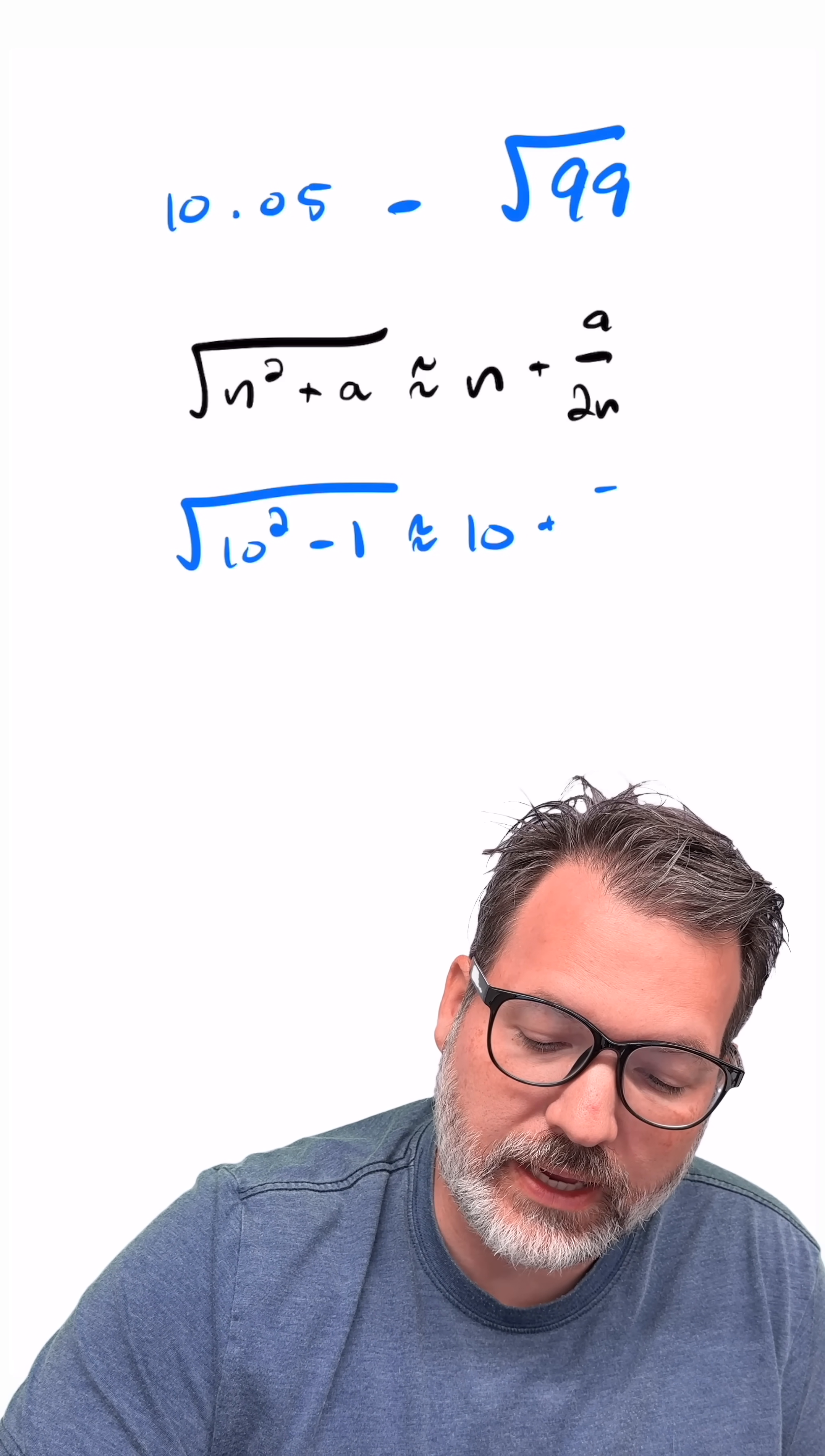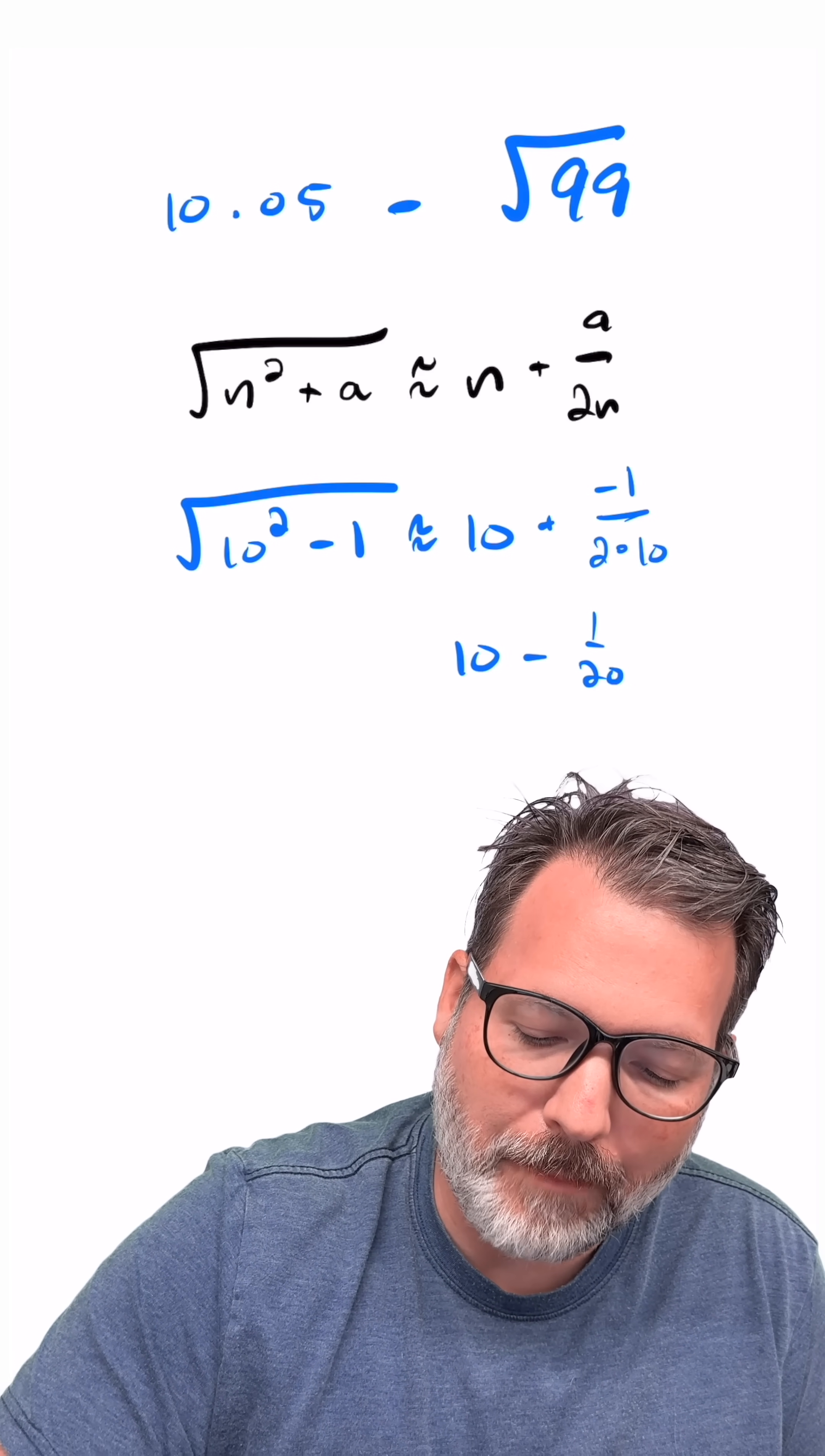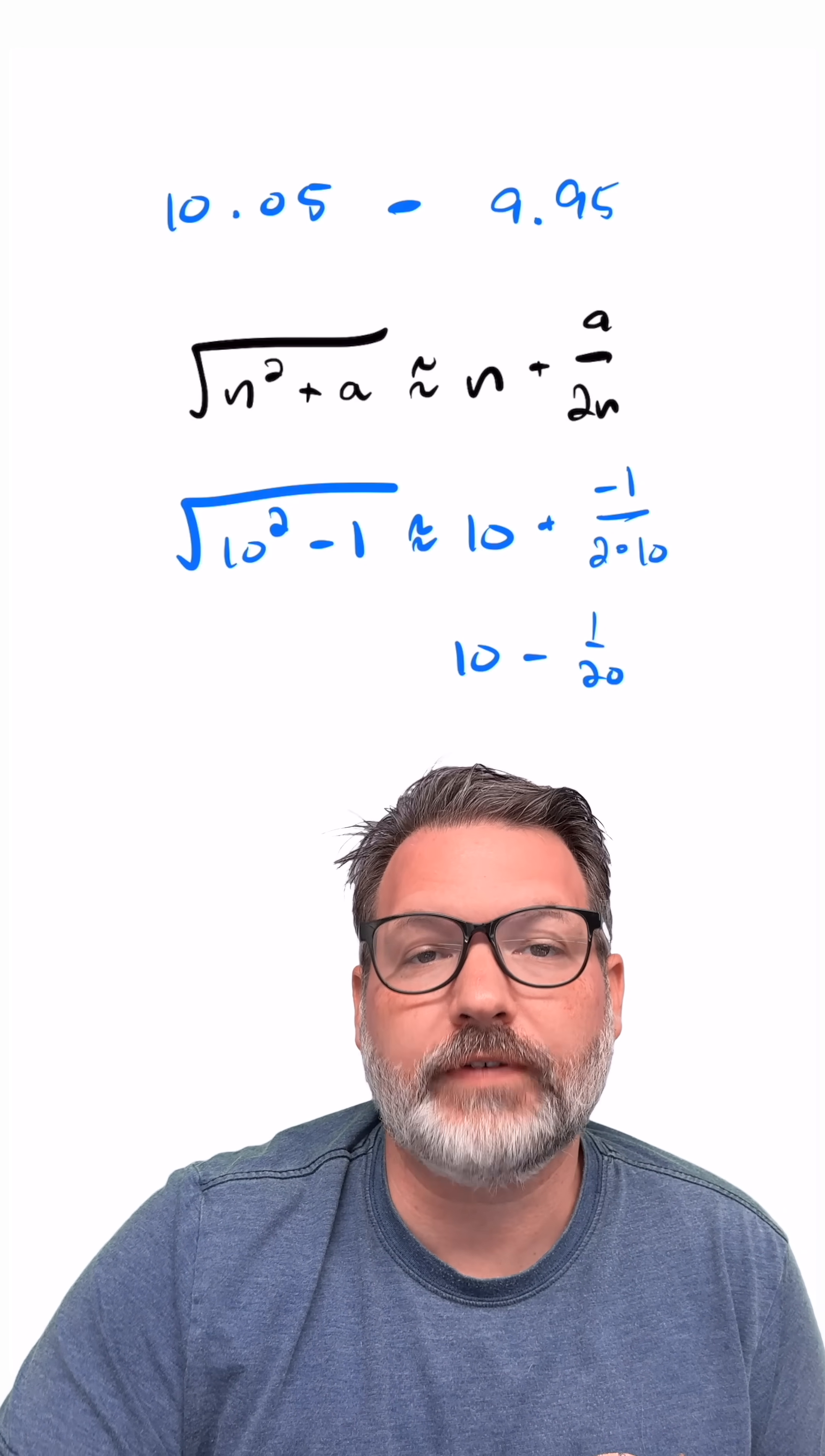This time, because a is negative, we've got a negative 1 over 2 times, again, that number we square to get the perfect square. And so here we end up with 10 minus 1/20, or what would work out to 9.95. So the square root of 99 is pretty close to 9.95.